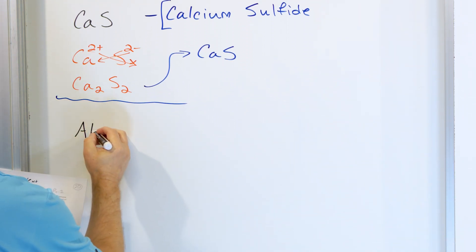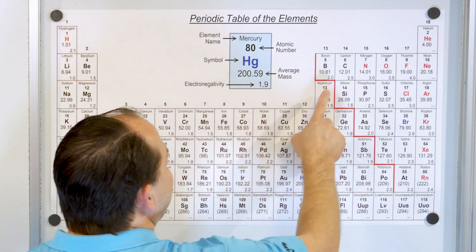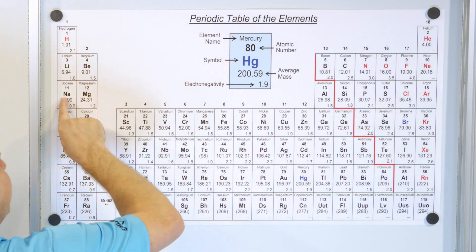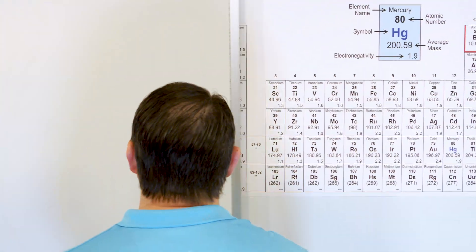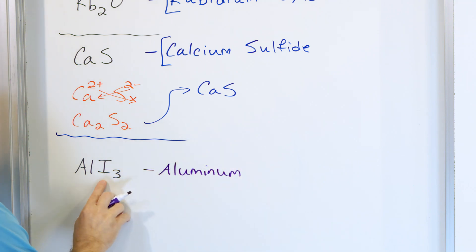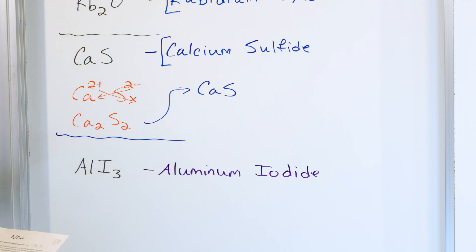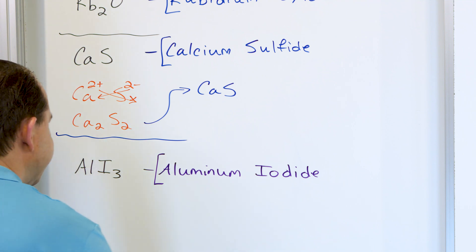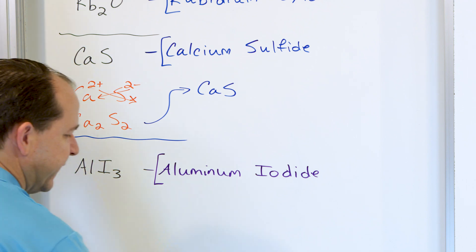Let's take AlI₃ — aluminum and iodine. Aluminum is over here on the periodic table; you might think it's a non-metal, but the stair-step line is here, so it is actually a metal. It's going to lose one, two, three electrons, and iodine is going to gain one electron. So it is a metal plus a non-metal. The name: we write the first element as aluminum, and iodine becomes iodide. When you see iodide, you know it's the ion form, and this is an ionic compound — aluminum iodide. Double check: aluminum forms a plus three charge, iodine forms a minus one, so the one comes to aluminum's subscript and the three comes to iodine's subscript — AlI₃ is correct.